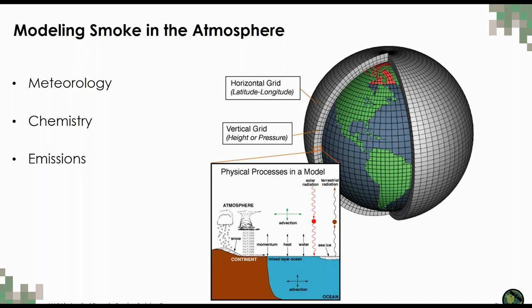Atmospheric chemistry models simulate the emission, transport, chemistry, and removal of trace gases and aerosols within each grid cell. To do this, they need information about the physical state of the atmosphere (meteorology), chemical interactions within each grid cell, and emission of trace gases and aerosols. Some examples of emission sources are power plants, cars, and fires. Once emitted, these emissions are subject to transport and chemical transformation. Where and when these emissions are released into the atmosphere is critical for the accuracy of air quality predictions.